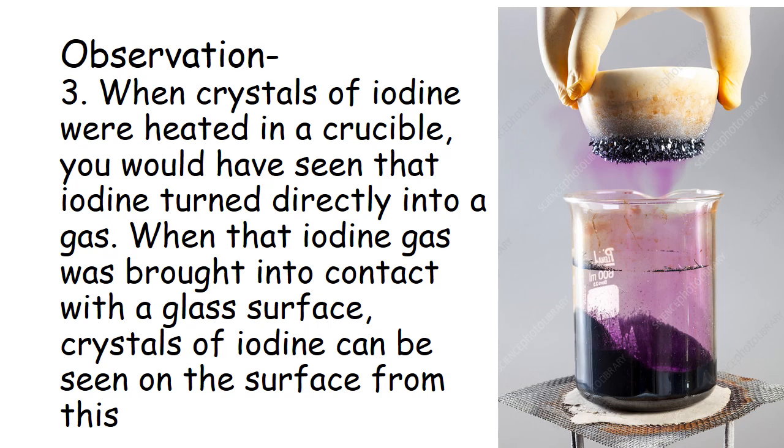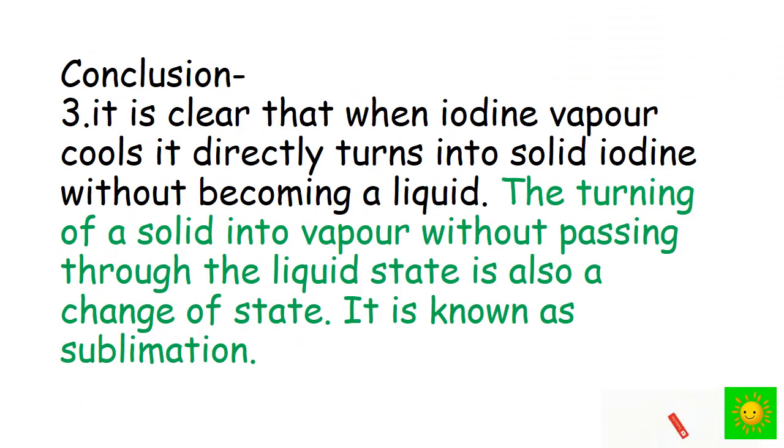When crystals of iodine were heated in the crucible, you would have seen that iodine turned directly into gas. When that iodine gas came into contact with the glass surface, crystals of iodine can be seen formed on the surface. It is clear that when iodine vapor cools, it directly turns into solid iodine without becoming a liquid. The turning of solid into vapor without passing through the liquid state is also a change of state. It is known as sublimation.